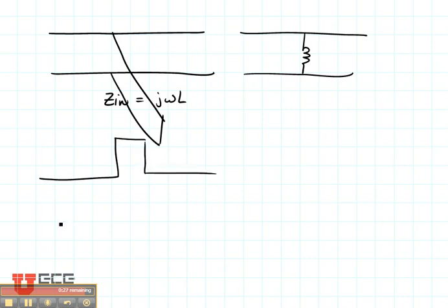But what if I connected it this way instead? Same stub, same input impedance, then I would end up with a series inductor. So we can build series inductors, series capacitors, parallel inductors, parallel capacitors, all with a combination of open or short circuited stubs.